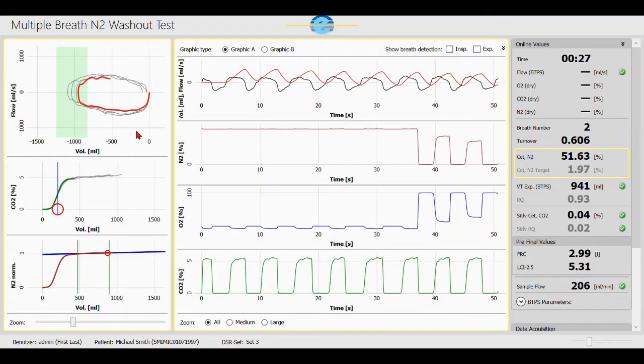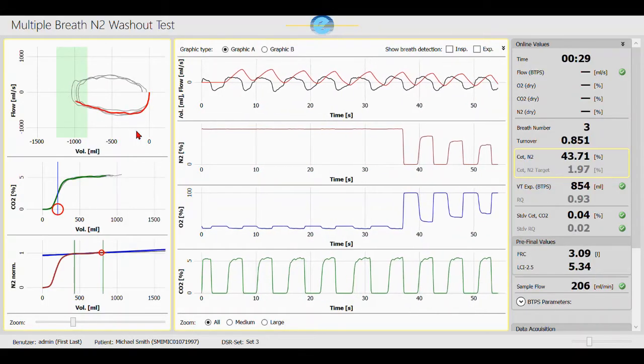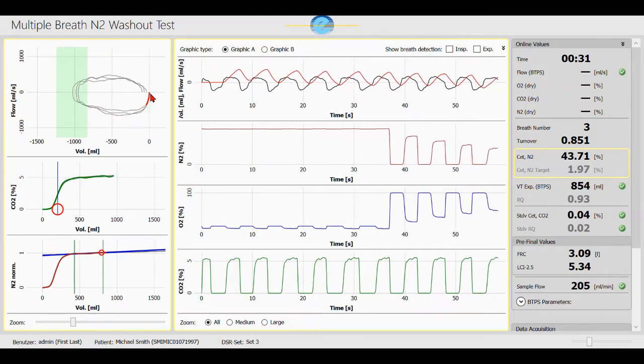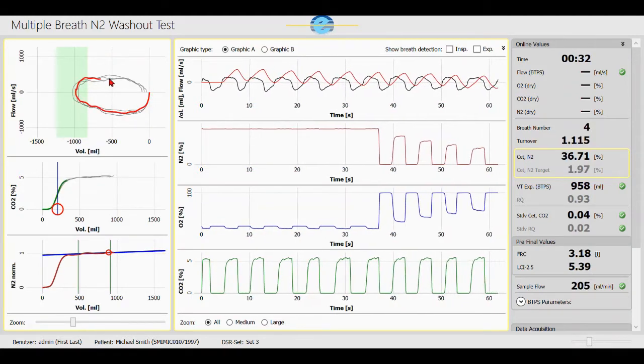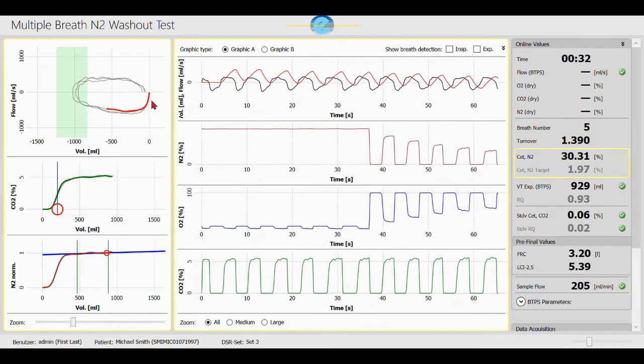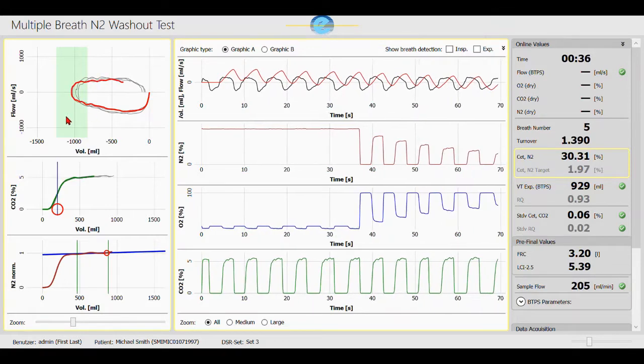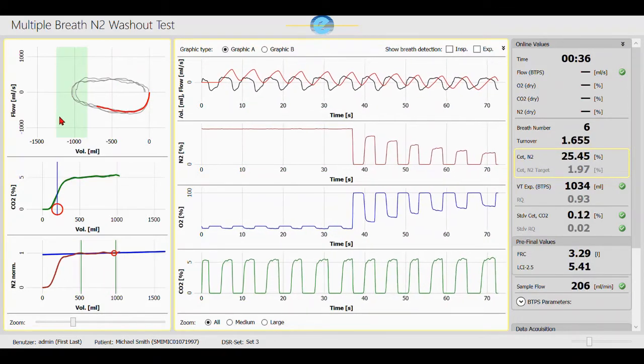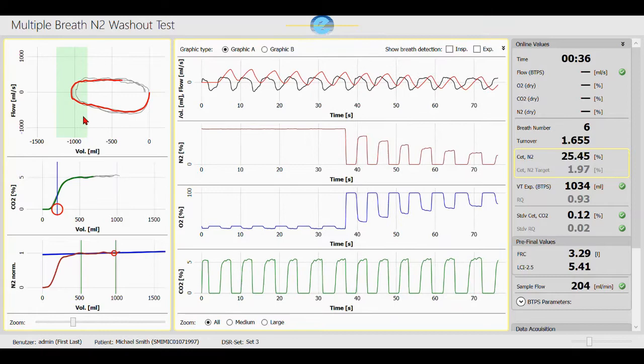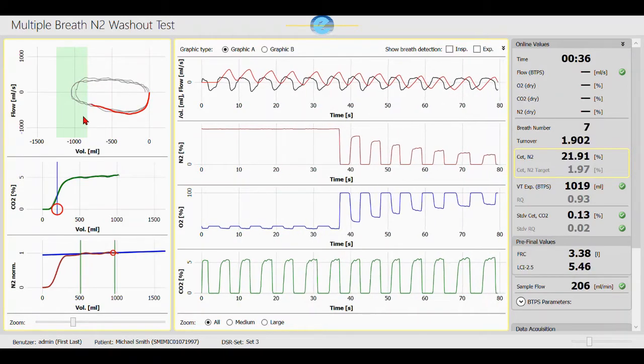During the washout, we can follow the progress in SpiroWear software. On the left, we have the flow volume loop. The flow volume loop should close, indicating regular breathing. The green area is a visual guidance in which predicted range the subject's tidal volume should be in.